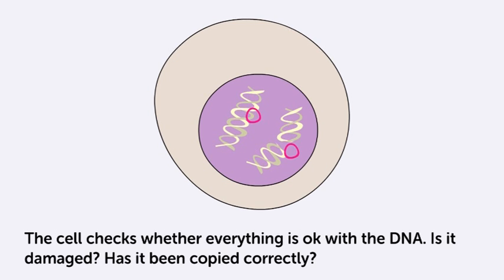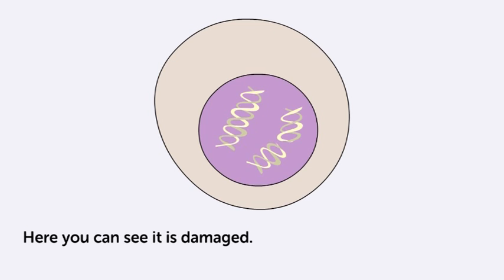The cell checks whether everything is okay with the DNA. Is it damaged? Has it been copied correctly? Here you can see it's damaged.